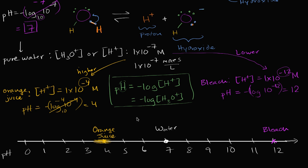I could plot other things too. The juices in your stomach — stomach acid — are going to be in this range here, quite low on the scale. And if you had something like seawater, it's going to be in this range right over here — slightly above neutral.